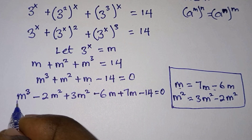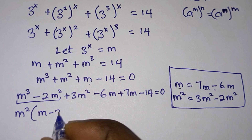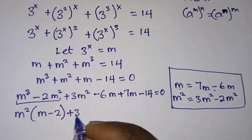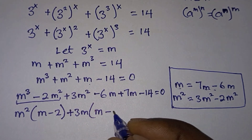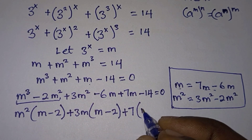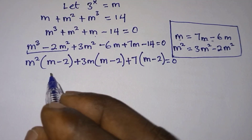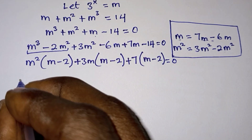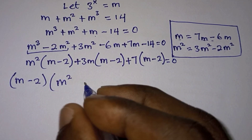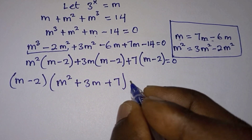From here we can take m squared out, giving m squared times (m minus 2). From the next terms we can take 3m out, giving plus 3m times (m minus 2). Then from the last terms we have plus 7 times (m minus 2). So we see that (m minus 2) is common throughout, leaving m squared plus 3m plus 7, and this is equal to zero.